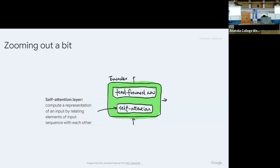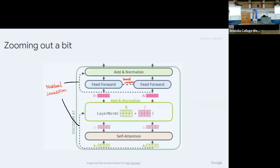That's the self-attention layer. Zooming out a little, there's more detail in the encoder layer: after the self-attention layer computes the representation, we add that to the original word embedding via a residual connection. That's put through the feed-forward layer, and then again a residual connection adds the input to the output. That gives us the output of one encoder layer.